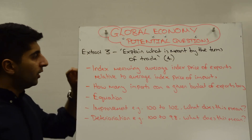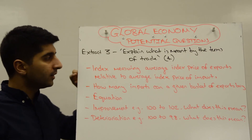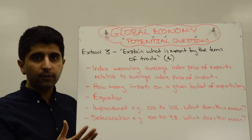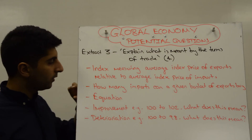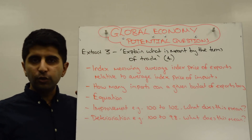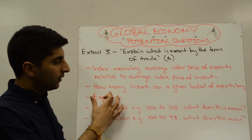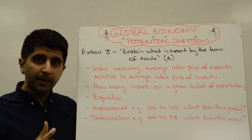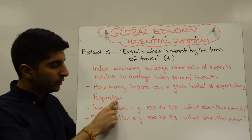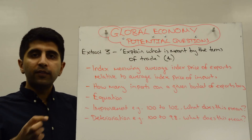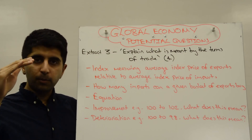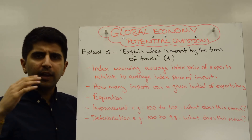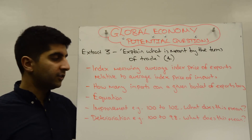Very simple question. One distinct point is just explaining what it is — it's an index measuring the average index price of exports relative to the average index price of imports. In simple English, the terms of trade index tells us how many imports a given basket of exports can buy. You will also state the equation: the terms of trade equals the average index price of exports divided by the average index price of imports, times by 100.